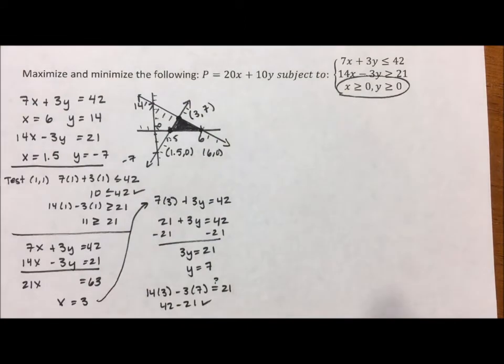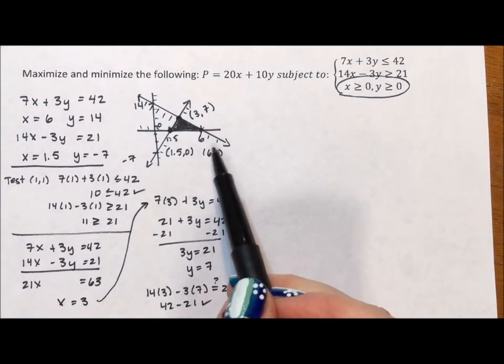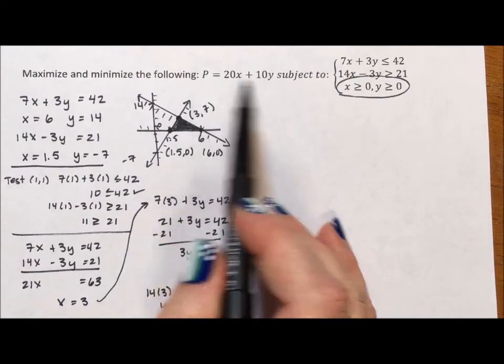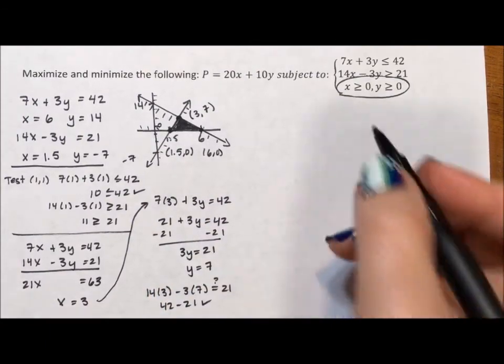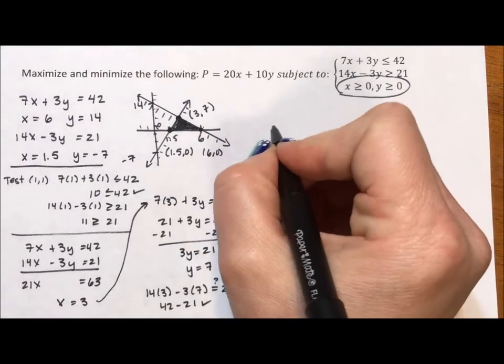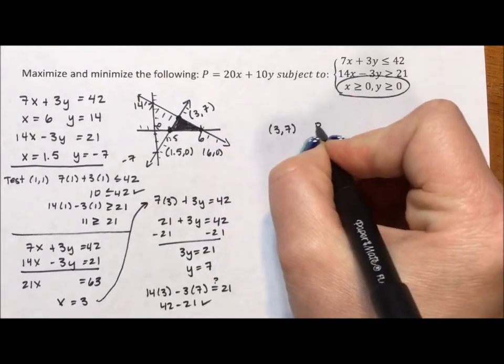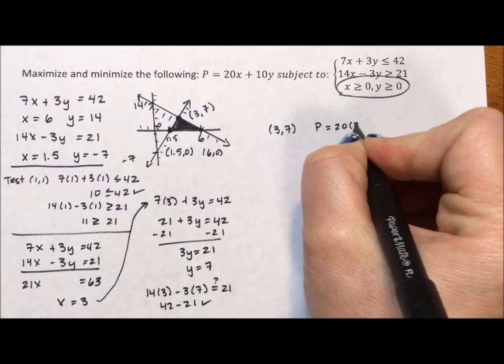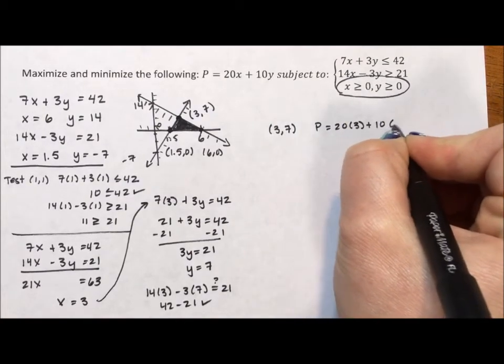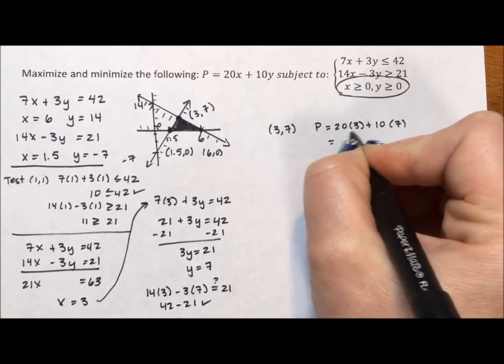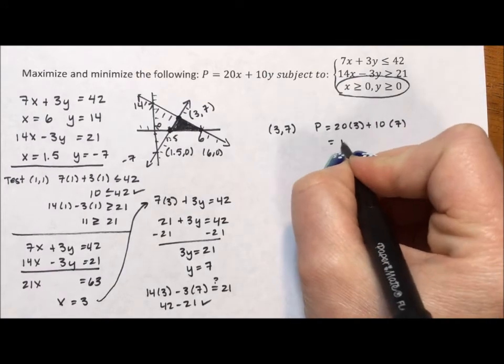Okay, so now I have the three corners of my triangle. All I need to do is use those three ordered pairs in this optimization equation. So I'm going to start with (3, 7). So I put the 3 in for x and the 7 in for y and I get 60 plus 70 which is 130.